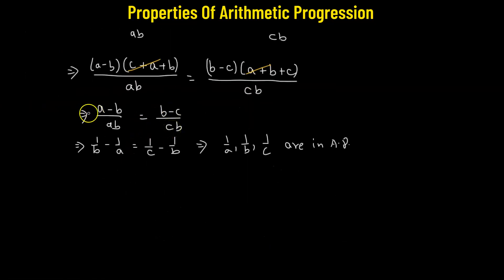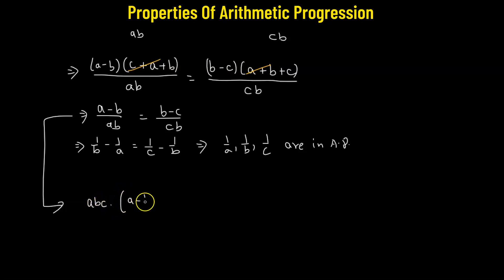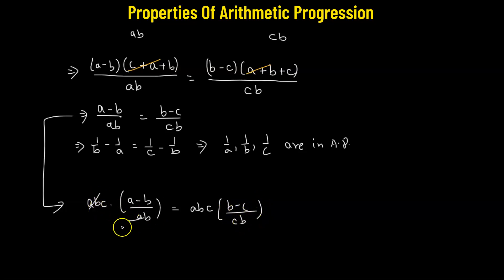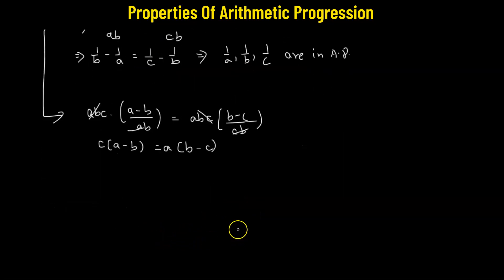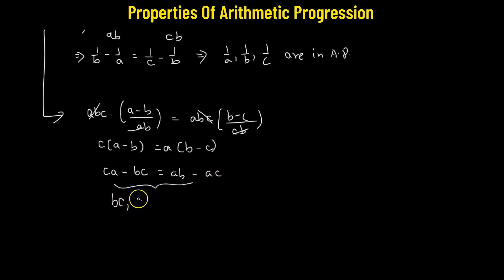Now what we'll do, we will consider this particular equation: (a−b)/ab = (b−c)/cb. We'll multiply by abc on both sides. So abc multiplied by (a−b)/ab equals abc multiplied by (b−c)/cb. Here, ab and ab gets cancelled, so we have c times (a−b). On the right side, bc and bc goes away, so we have a times (b−c). Further simplification gives us ca − bc = ab − ac. This particular relationship tells us that bc, ca, and ab are the three numbers that are in arithmetic progression. Hence, we have successfully shown the second part as well.